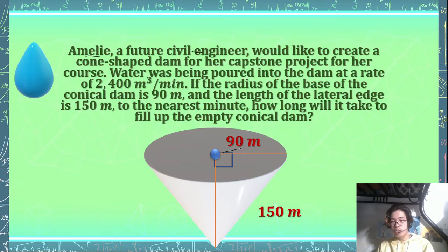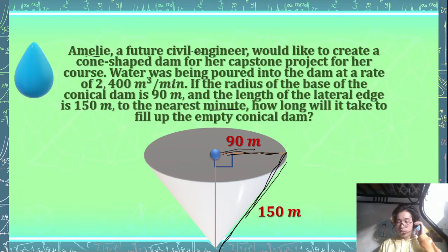So this is the base of the dam, and its radius is 90 meters, and the length of the lateral edge of this part here, so that's 150. To the nearest minute, how long will it take to fill up the empty conical dam, given that we have here this rate of the water being poured into the dam?